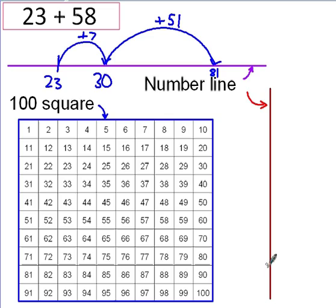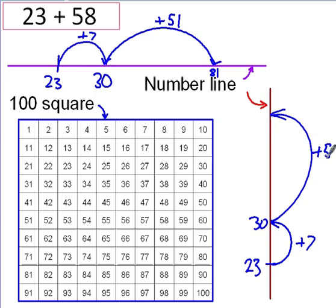On a vertical number line, it would look like this. Here's 23. Nearest friend town, village, over the bridge, 7 steps away. 23 plus 7 is 30. 30 plus 51 is 81.